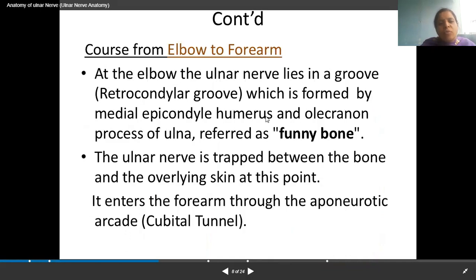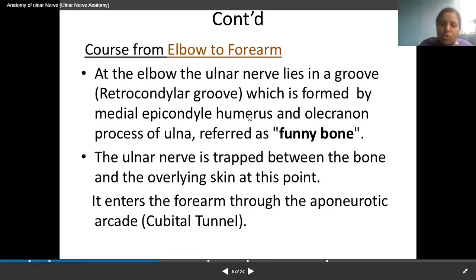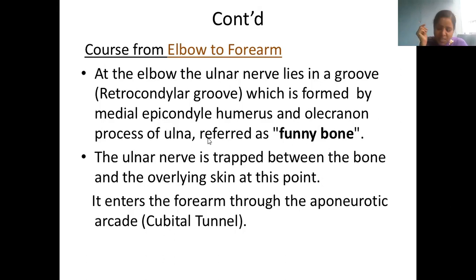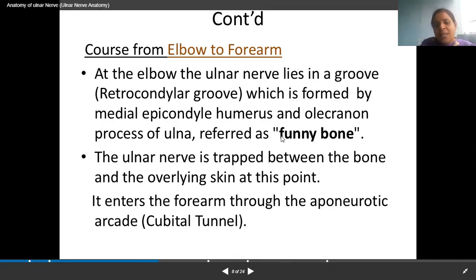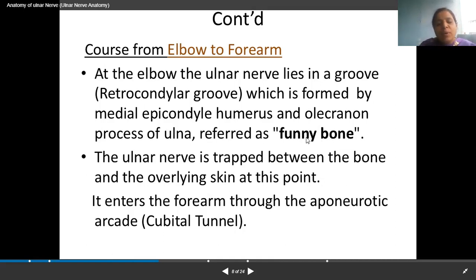From the elbow to the forearm, the ulnar nerve lies in a groove behind the medial condyle — specifically, it passes just behind the medial epicondyle of the humerus and the olecranon process of the ulna. Sometimes when we lean on this area, a tingling sensation occurs. That is why the humerus is called the funny bone — because the ulnar nerve becomes cutaneous just behind the medial epicondyle.